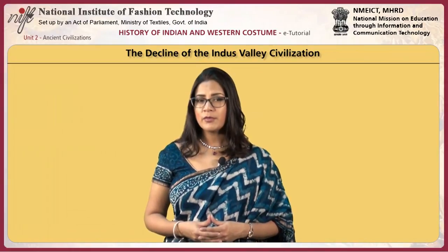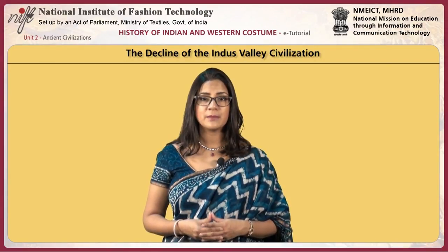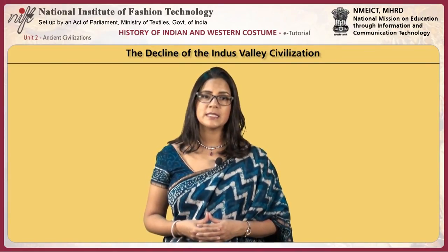Other experts speak of a great flood in the area. Either event would have had catastrophic effects on agricultural activity, making the economy no longer sustainable and breaking the civic order of the cities. Other animal motifs appearing on seals found primarily at the largest cities include dangerous wild animals like the rhinoceros, the water buffalo, the gharial (the crocodile) and the tiger. All of these animals would have been familiar to people living at the edge of the thick jungles and swampy grasslands of the Indus plain, and they were revered as totemic animals closely associated with important myths and legends.